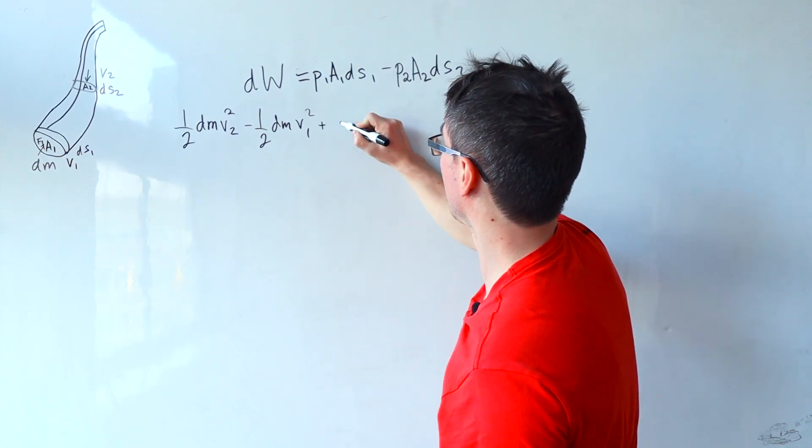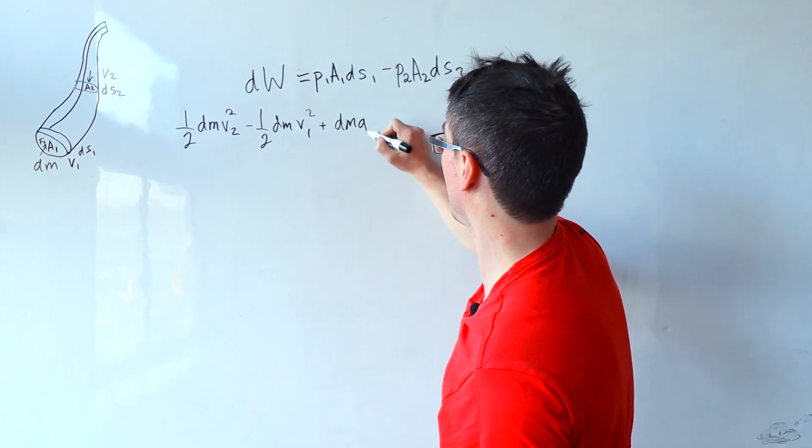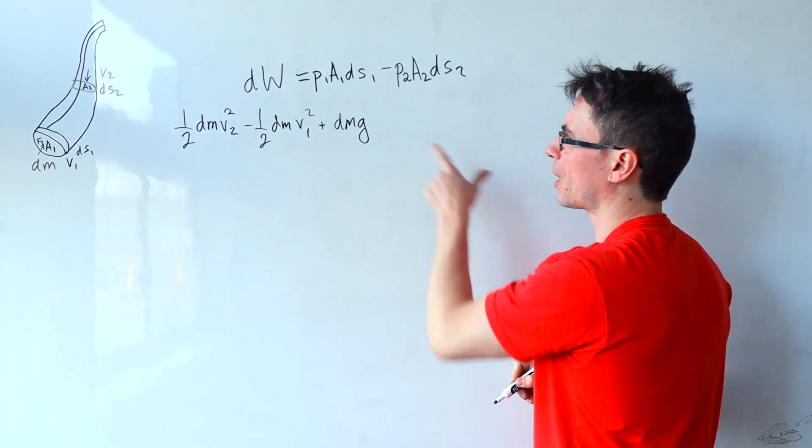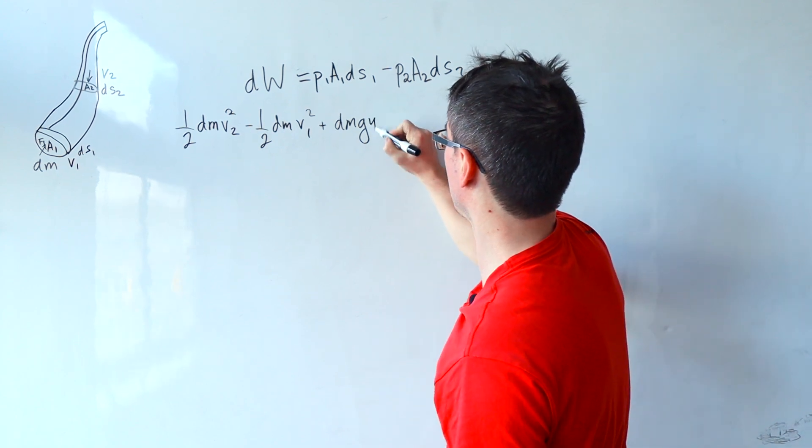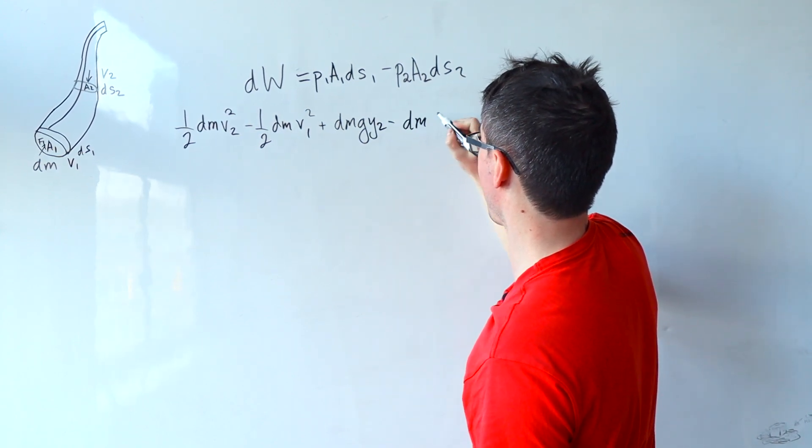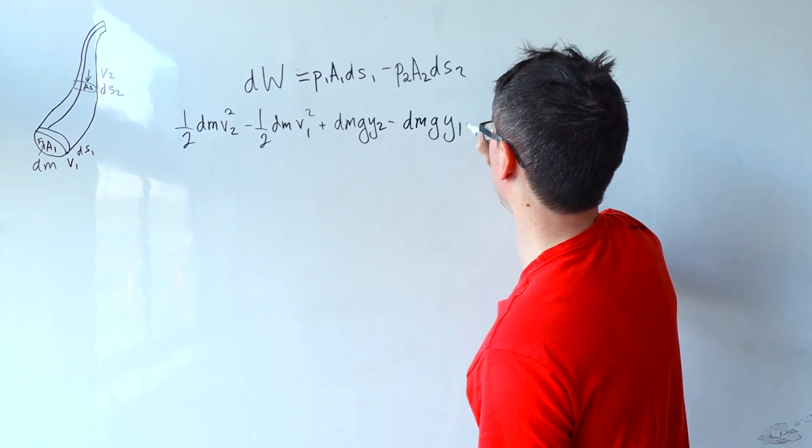So we can add in dm times g times the height coordinate. Shall we just call it the y coordinate? So y2 take away dm g y1.